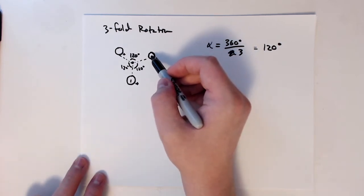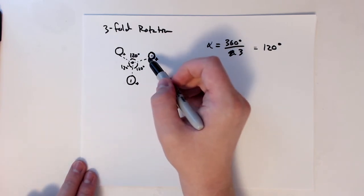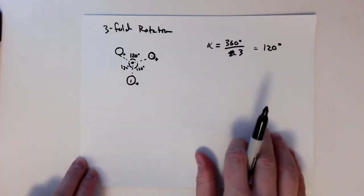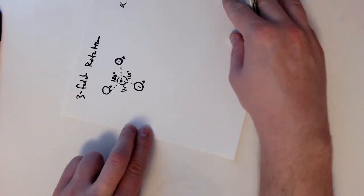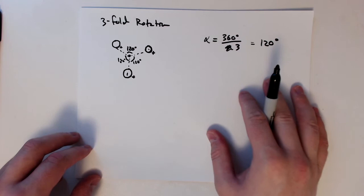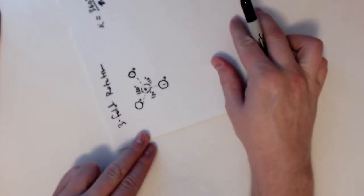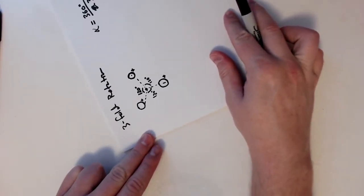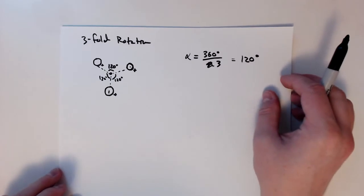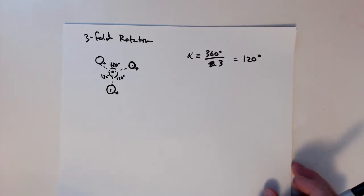Another way to think about it: if I take an object and rotate it 120 degrees, it will appear the same. So if I rotate this image 120 degrees, it looks the same. Do it again — it looks the same. And one last time — it looks the same. It's easier if you have a physical object to rotate, but that's another way to think about the same idea.